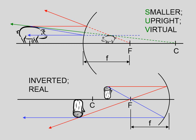Those light rays really do intersect right there. It turns out that all real images are always inverted, and that all virtual images are always upright.